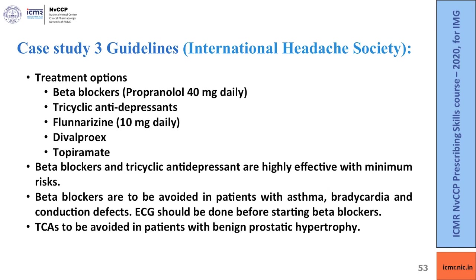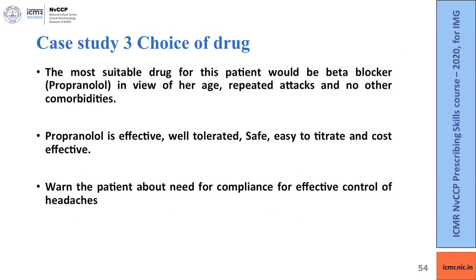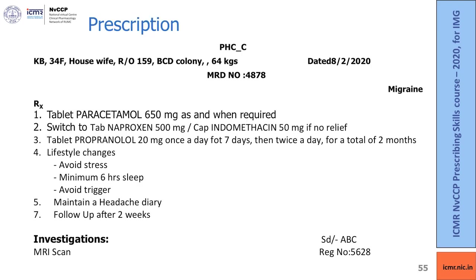The drug of choice for this patient is propranolol. She is in the second to fourth decade of life with repeated attacks and no comorbidities contraindicting beta blockers. Propranolol is effective, well tolerated, safe, easy to titrate and cost effective. Warn the patient about the need for compliance, as patients tend to become non-compliant when events are not occurring frequently.